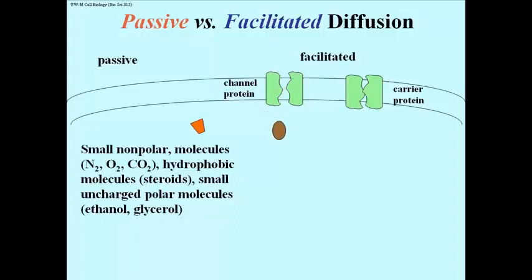Facilitated diffusion can be of several types. This one is through a channel protein, and this one is through a carrier protein. The difference basically is that carrier proteins will generally undergo significant conformational change during transport, and that was illustrated by the wiggling receptor here.